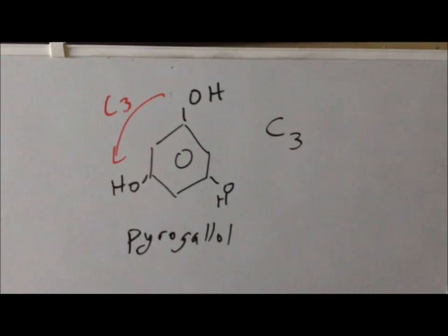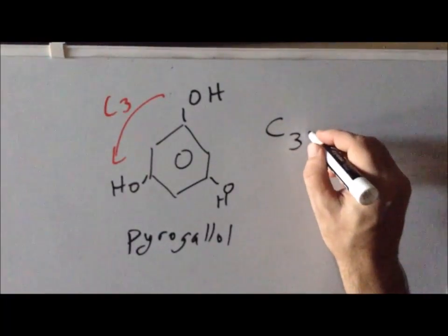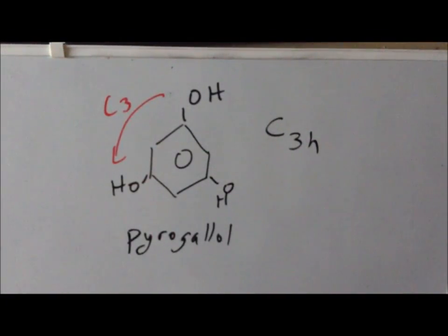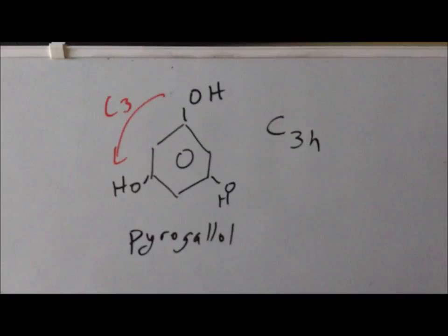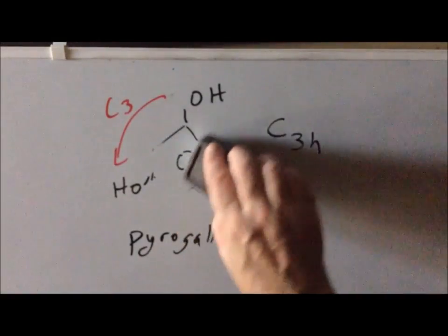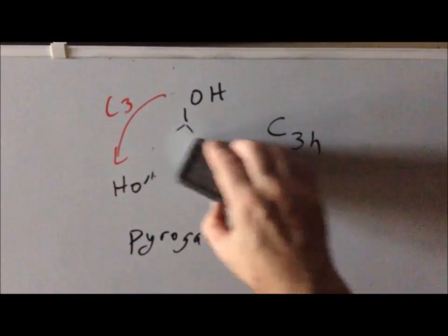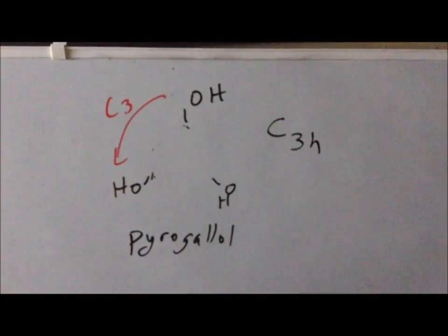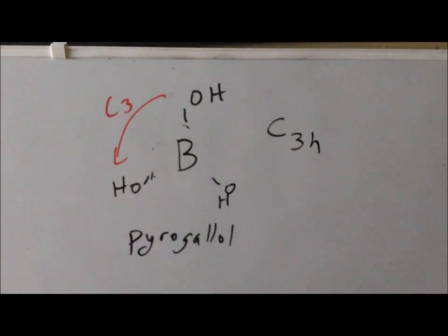Our classic example to keep in mind for the C3h point group is boric acid. With a small modification of the pyrogallol molecule — replacing the benzene ring with a boron atom — we get exactly the structure of boric acid. So the most common inorganic example of C3h symmetry is boric acid, while the organic chemistry example is pyrogallol, as long as the hydroxy groups are arranged in the appropriate planar conformation.